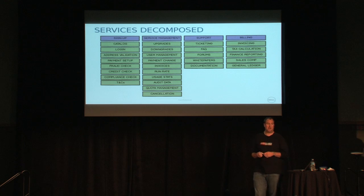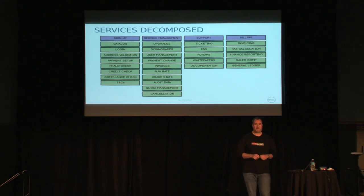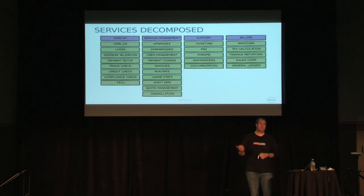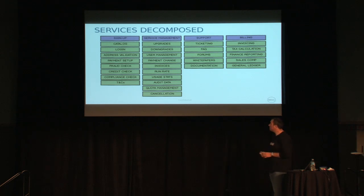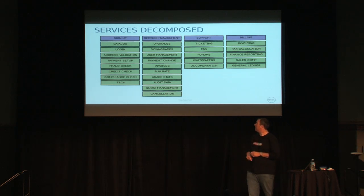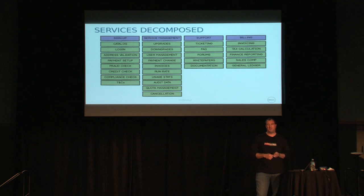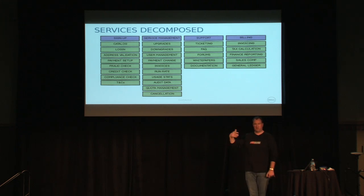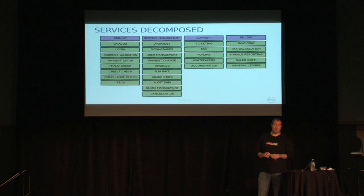Run rate represents how much you've consumed for the current billing period — up to the last midnight, say. We run a rating run every midnight so someone can see where they're at, which allows cost control as a consumer. Usage statistics is slightly different: what users are using what in my cloud? As an admin, I want to see who's doing what and who's using up all the resources versus who isn't doing what I expected.